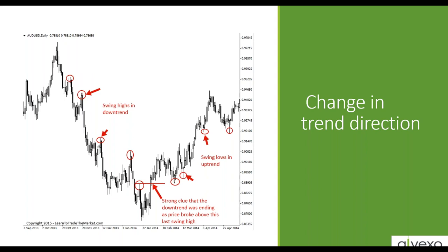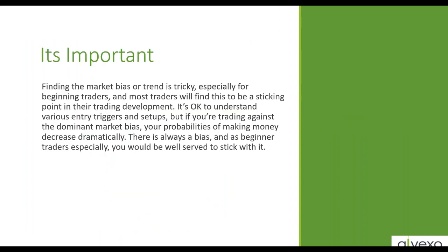Identifying swing highs and lows will also help us see a change in direction. When we're making a series of higher highs and higher lows and the next low breaks the previous low, that's telling you there's a change in direction of the trend — or more aptly, that trend is in trouble. Finding the market bias or trend is tricky, especially for beginning traders, and most traders will find this a sticking point in their trading development. If you are trading against the dominant market bias, your probabilities of making money decrease drastically — in other words, the trend is your friend.